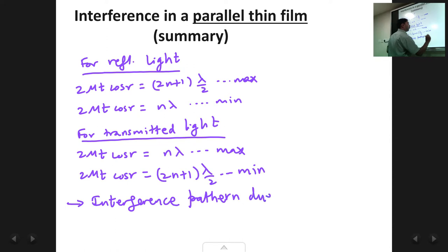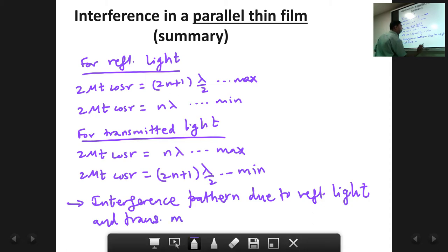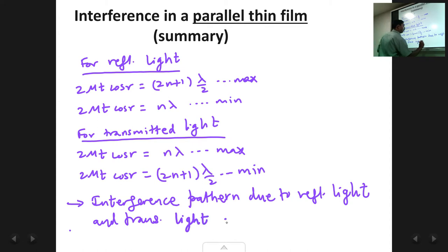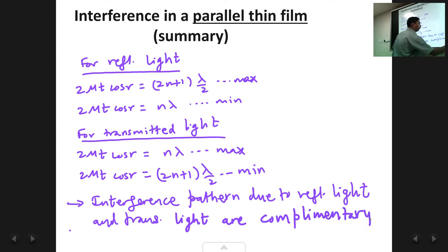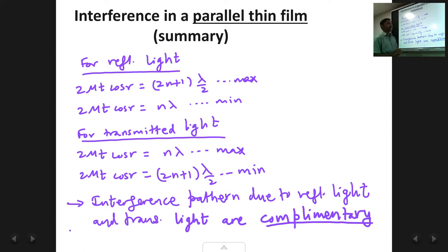The interference pattern due to reflected light and transmitted light are complementary. The important word is complementary — just as black and white are complementary colours, bright and dark are complementary. So in reflected light what is bright becomes dark in transmitted and vice versa; reflected light and transmitted light interference patterns are complementary to each other.